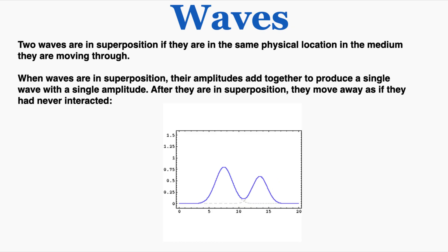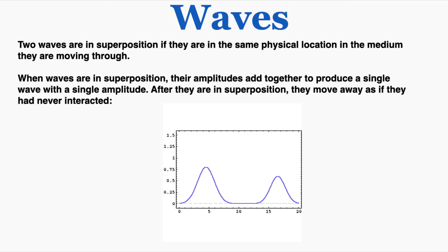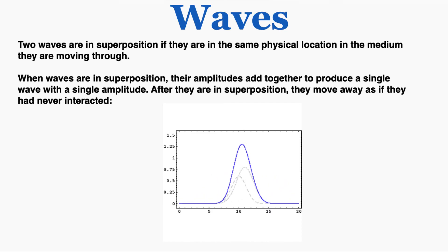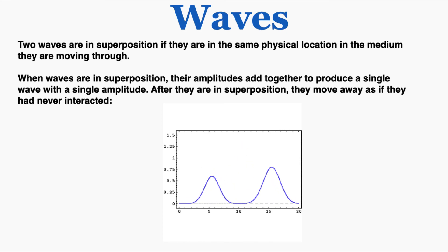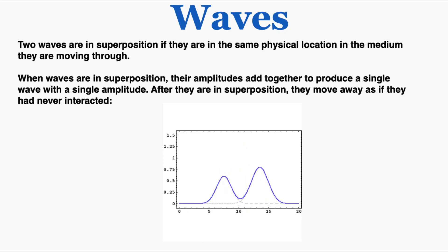This animation shows an example of two waves in superposition. You can see two independent waves that move through each other, and in the times when they occupy the same physical location, their amplitudes add together to produce one overall wave, and then they continue to move as if they never interacted in the first place.